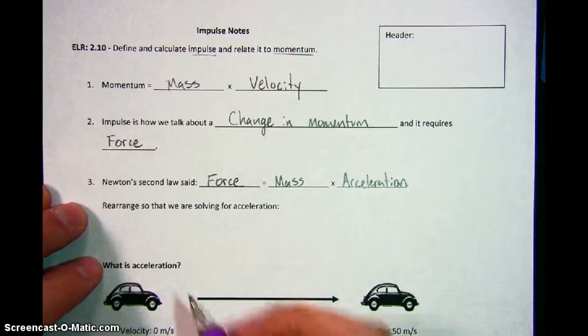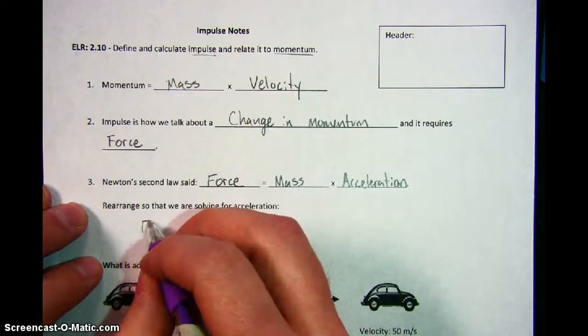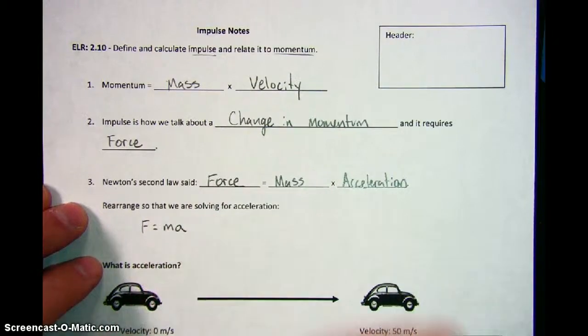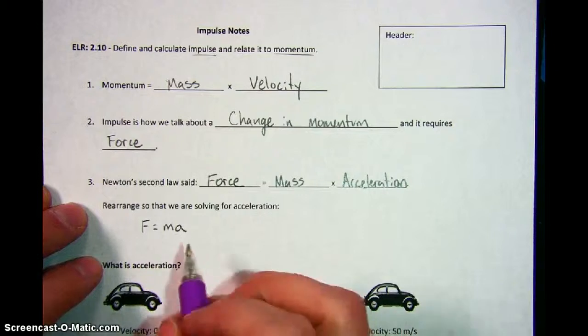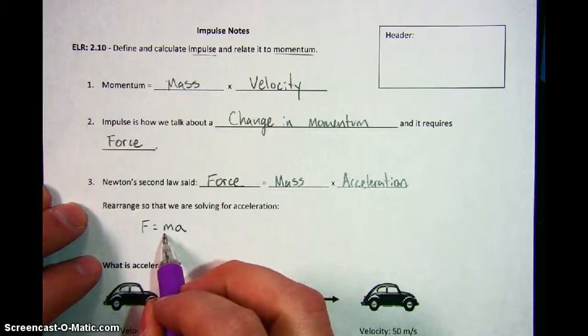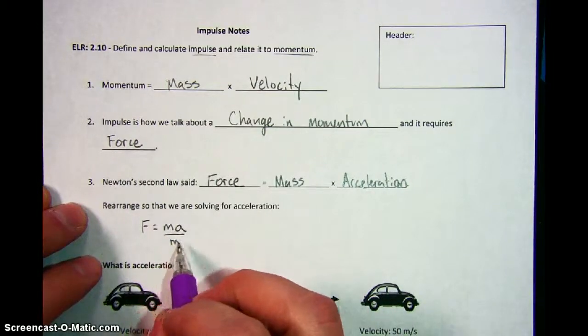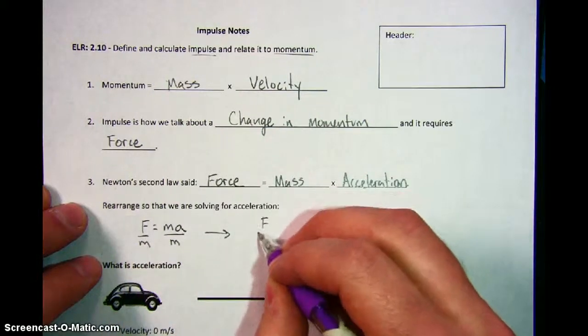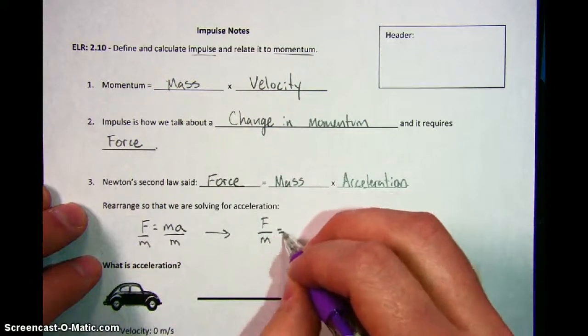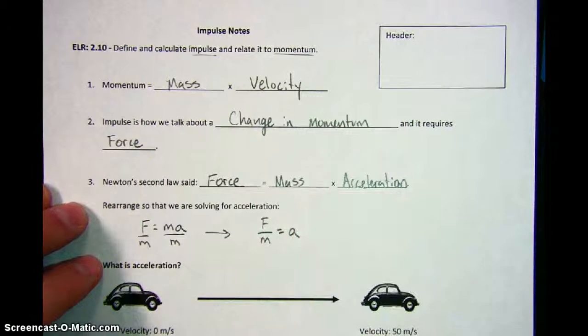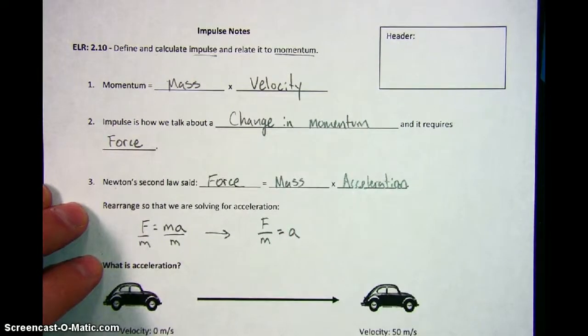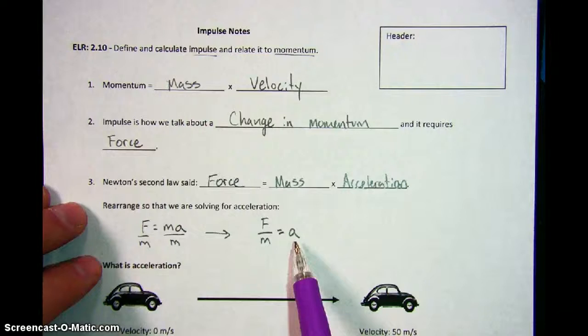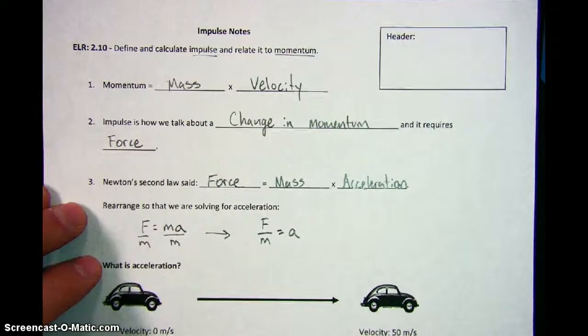Here's what we're going to do. Since Newton said that force equals mass times acceleration, what we're going to do is we're going to actually rearrange this equation in order to solve for acceleration. The way we're going to do that is by dividing both sides by mass, and what you get is force divided by mass equals acceleration. So all I did was rearrange what Newton's equation was all about, and what we've solved for is acceleration.